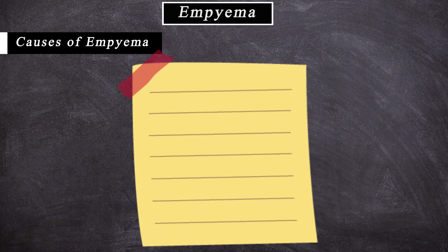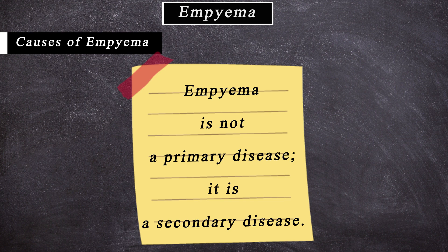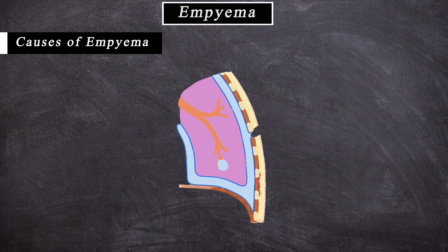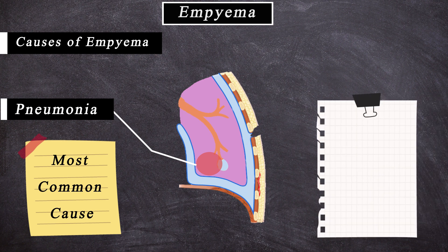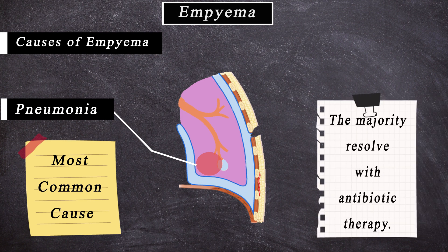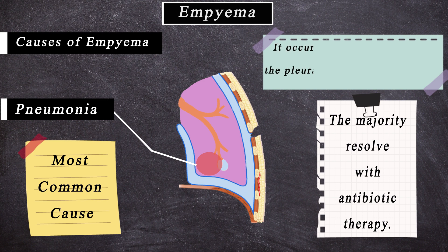What are the causes of Empyema? First, you have to know that Empyema is not a primary disease — it is a secondary disease. Causes of Empyema include pneumonia. A parapneumonic pleural effusion is the most common cause of Empyema. The majority resolve with antibiotic therapy. Post-pneumonic Empyema forms when bacteria infect the pleural fluid or pleural space.